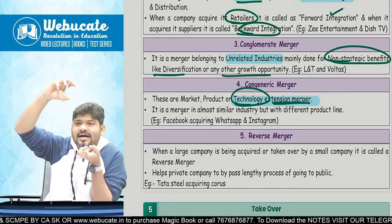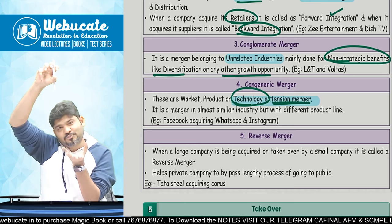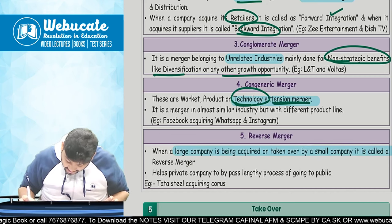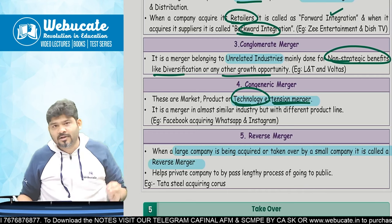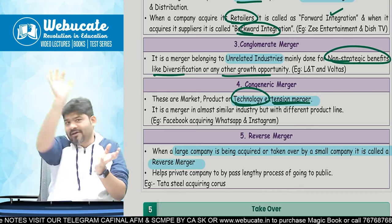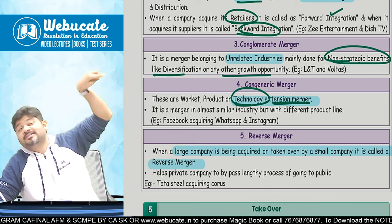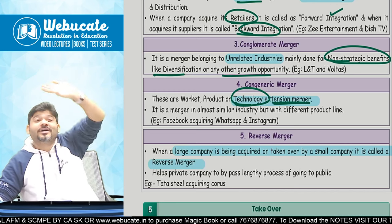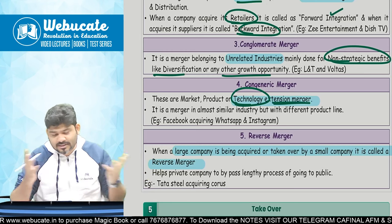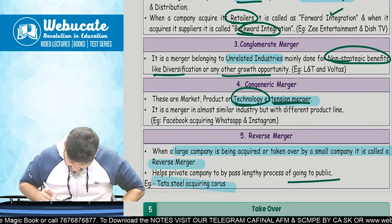Tata Steel was the sixth largest but it acquired Corus Steel, which was the third largest. When a small company acquires a company bigger than itself, it is called a reverse merger. It also happens that private companies acquire a listed company — by default that private company has entered the stock market without the typical IPO listing route, since it is already the owner of a listed company. Tata Steel acquiring Corus was the best example of a reverse merger.